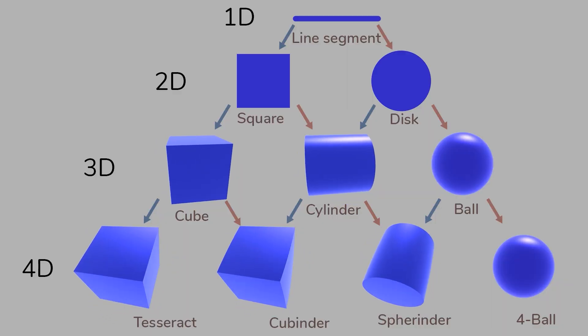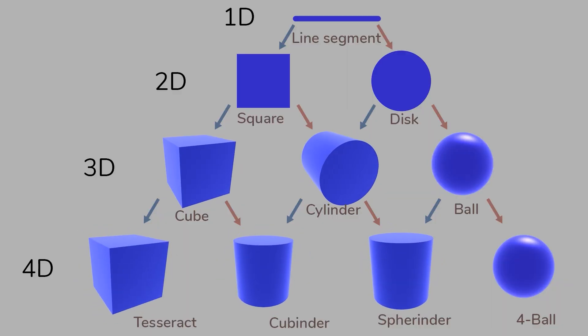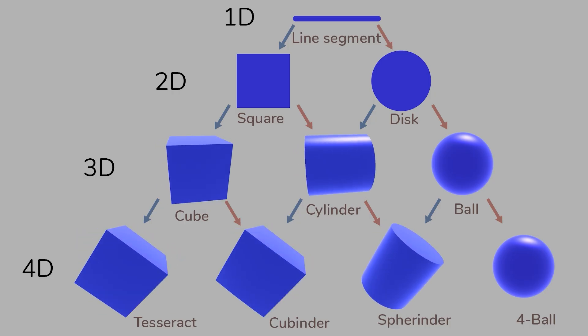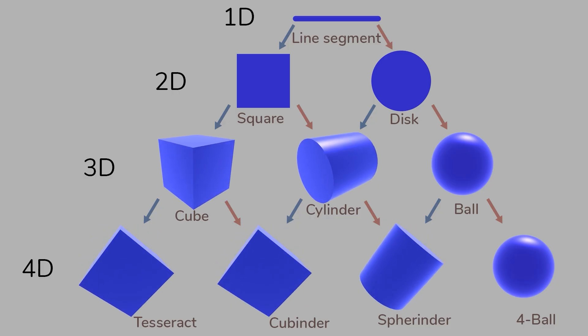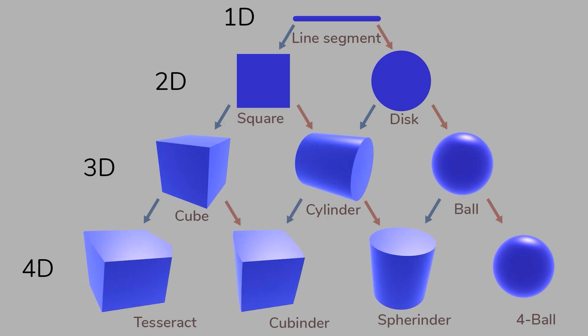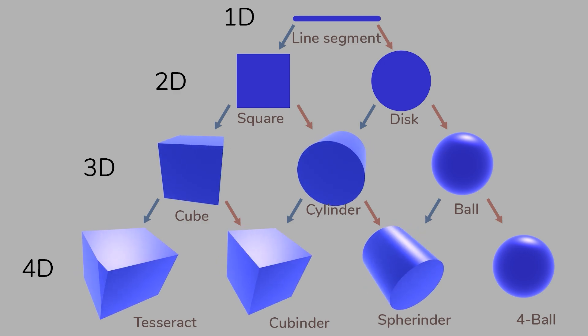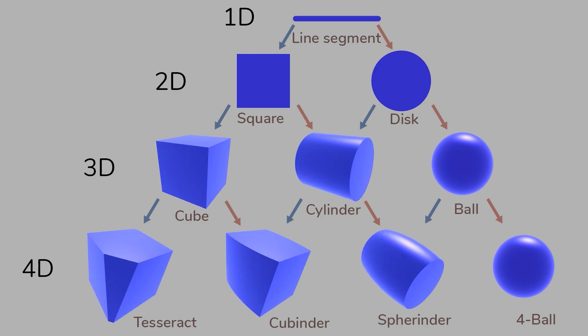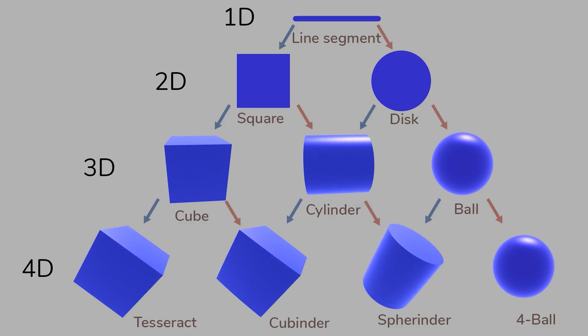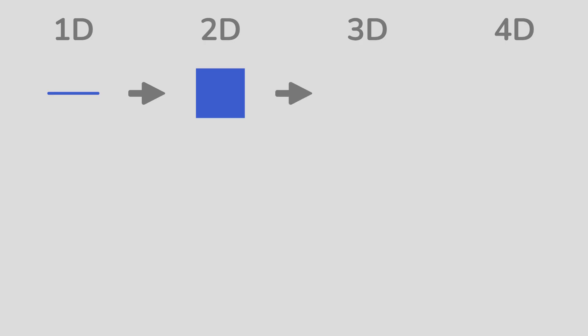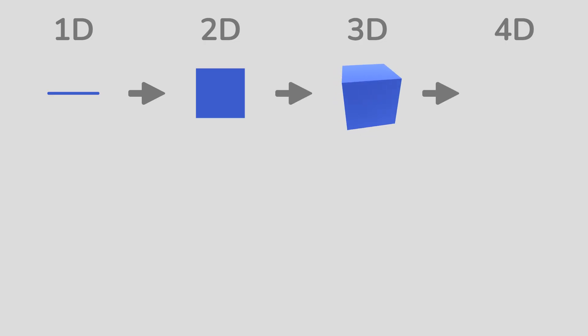In the previous video, I demonstrated how to create these four-dimensional shapes using two operations: extrusion, represented here by an arrow pointing to the left, and revolution, represented here by an arrow pointing to the right. Let's talk about the revolution operation a bit later, because there are many other things to explore with extrusion. For example, we can obtain all these shapes just by extruding n-dimensional balls. A one-dimensional ball is simply a line segment. Extruding a line segment gives us a square, extruding a square gives us a cube, and extending a cube gives us a tesseract.